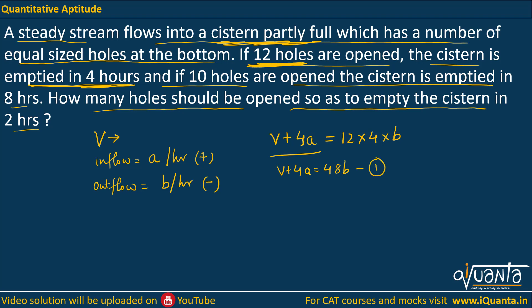We will form the equation when 10 holes are opened. V was already present, taking the second case, the cistern is emptied in 8 hours, so this inflow would be working for 8 hours, so V plus 8a will be the volume coming into it and this is being emptied. 10 holes all working for 8 hours, and rate of outflow of every hole is b units per hour, so V plus 8a equals 80b. This is the second equation.